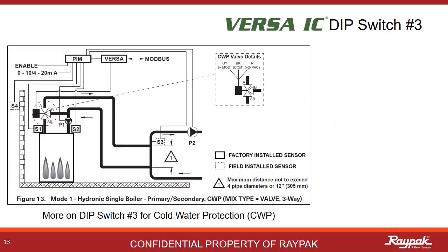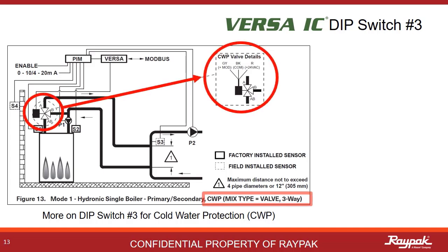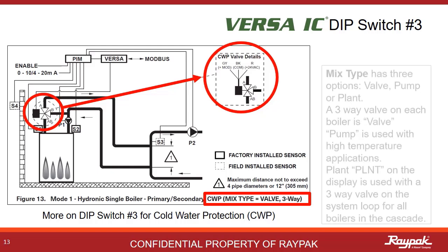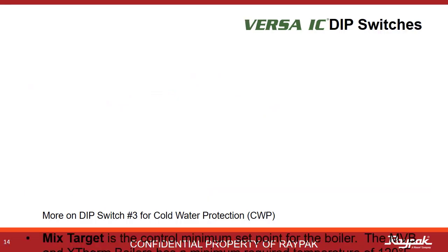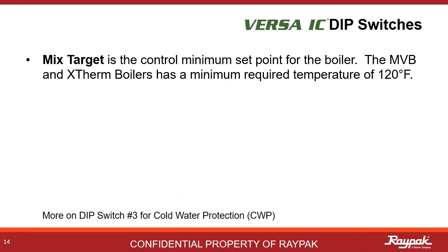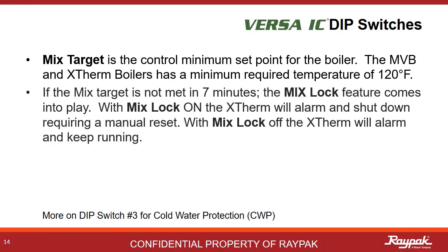Mixed type describes the type of cold water protection that is present. If it is a three-way valve like depicted here, then the mixed type is valve. If an injection pump is used, like on our Xtherm models, then the mixed type is pump. If there are multiple boilers in cascade and the cold water protection is a three-way valve set up down by the decoupler, then the mixed type is plant. Mixed target is the minimum inlet level the boiler can take — the lowest this can be set to is 50 degrees Fahrenheit. If the mixed target is not met in seven minutes, the boiler can either alarm and keep running, or alarm and shut off.